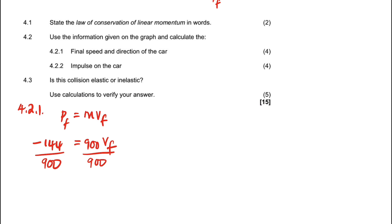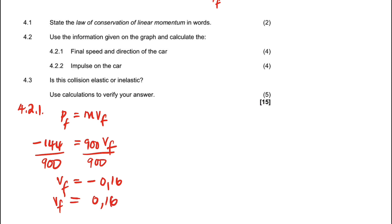Dividing negative 144 by 900 gives a final velocity of negative 0.16 meters per second. The negative sign means the car is moving in the opposite direction after the collision. We interpret this as 0.16 m/s west, since east was defined as positive.